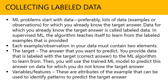What does that mean? For example, let's say you are going to predict new employee hiring for the next year. For that, you need your HR data, because that's the historical data that you'll use to predict the target answer. Data for which you already know the target answer is called labeled data. In supervised machine learning, the algorithm teaches itself to learn from the labeled examples that are provided. So each example in your data must contain two elements: it has to have the target, and the other element is the variables or features. The target is the answer you want to predict. We provide data that is labeled with this answer, input it to the machine learning algorithm — whether it's classification, regression, or whatever you want to use — and then use the trained model to predict this answer on data for which we don't know the target answer.